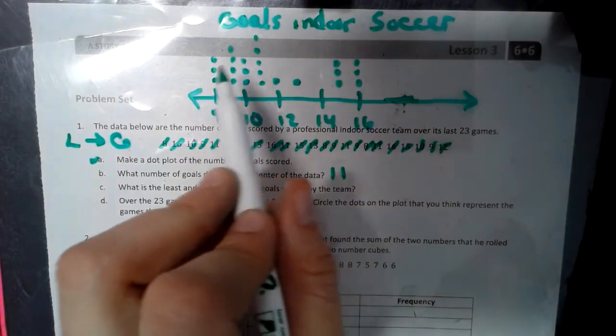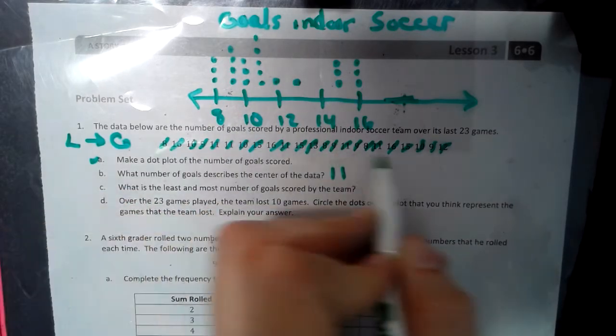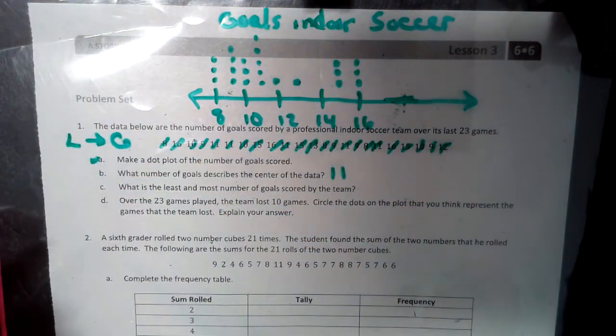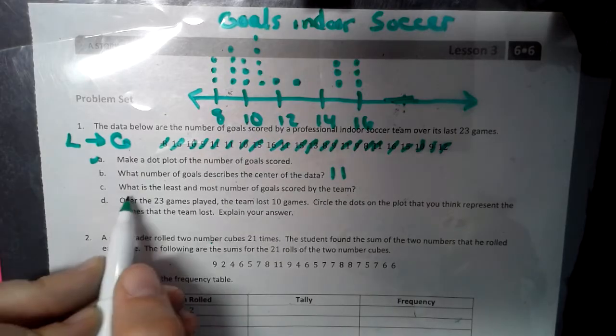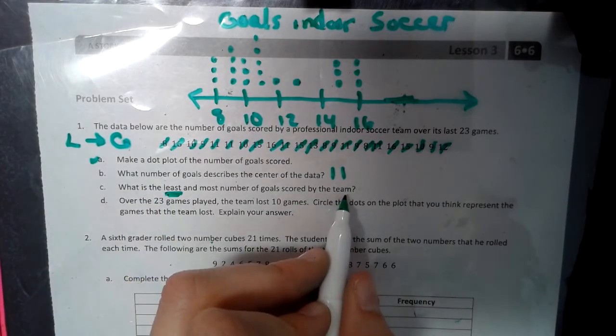Now, if that is confusing to work off the dot plot, you could rearrange these numbers in order from least to greatest. And then you would just start crossing them out until you get to the center. What is the least goal scored by a soccer team?